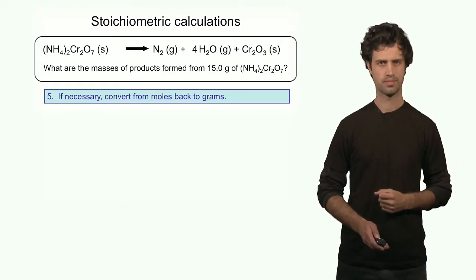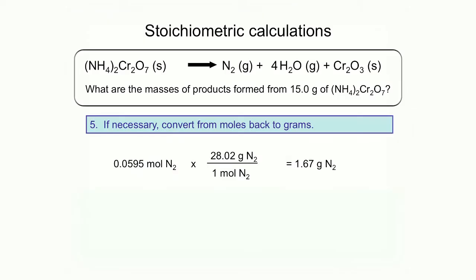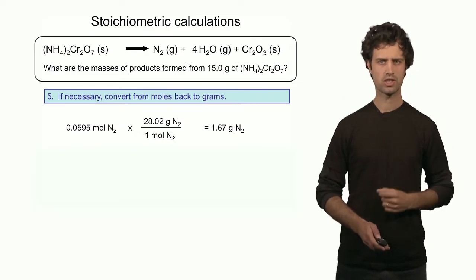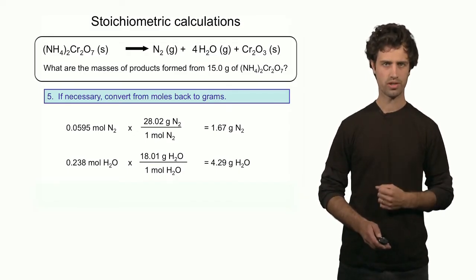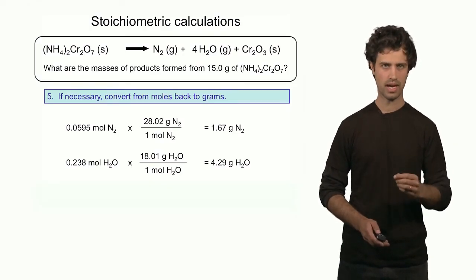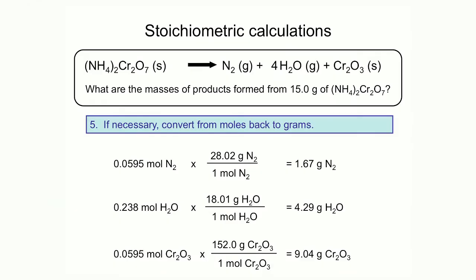Now I know the number of moles of each product, but I need to convert moles to grams. For nitrogen: 0.0595 moles times the molar mass of nitrogen molecules gives 1.67 grams of nitrogen. For water: 0.238 moles times the molar mass of water gives 4.29 grams of water. And finally, 0.0595 moles of chromium oxide times its molar mass of 152 grams per mole equals 9.04 grams of chromium oxide.